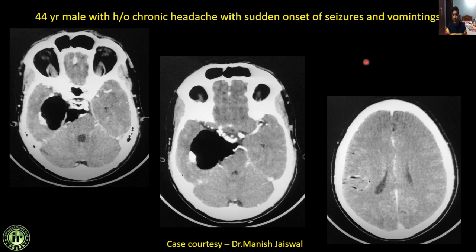Next: a 44-year male with chronic headache and sudden onset seizures and vomiting. There is a fat-containing cystic lesion in the right temporal lobe with eccentric calcification and even a tooth-like structure within the wall. Importantly, fat droplets are noted in the sulci in the superior sections — this is fat dissemination into the CSF spaces. This is a case of intracranial dermoid cyst with rupture leading to fat dissemination. Thanks to Dr. Manish Jaiswal for contributing this case. These cases can present as chemical meningitis.